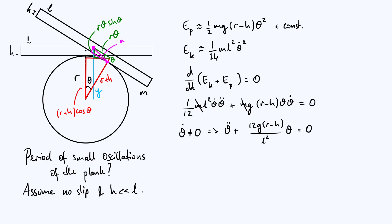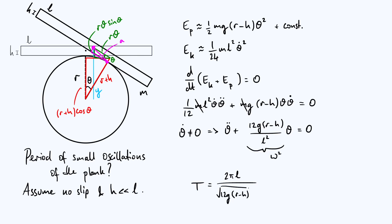This is the standard equation for simple harmonic motion, where the pre-factor of θ is ω², ω being the angular frequency of oscillations. Using T = 2π/ω, the period is T = 2π·l / √(12g(r − h)).